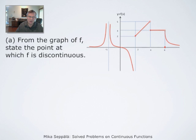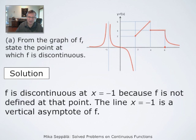Let us first look at the points where f is discontinuous. Clearly, at the point x equals negative 1, f of x is undefined, so f is discontinuous. It is customary to say that if we have a point like negative 1 for which f is undefined, but near this point on both sides f is defined, then we say that is a point of discontinuity. So negative 1 is the first point of discontinuity.